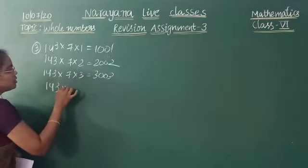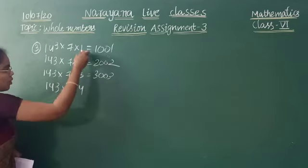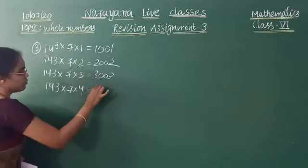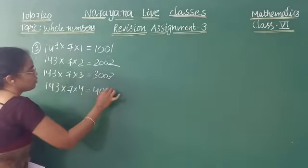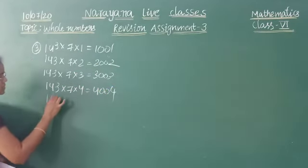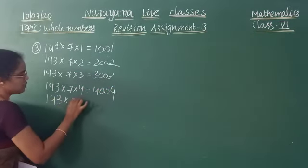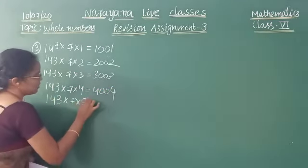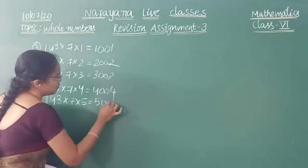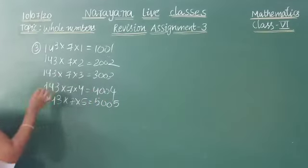In sequential order 1, 2, 3, 4 — so 143 × 7 × 4 = 4004. And the next 2 steps they ask: 143 × 7 × 5 = 5005. These are the next 2 steps.